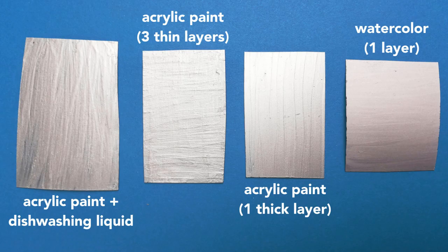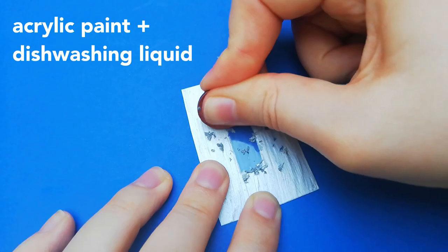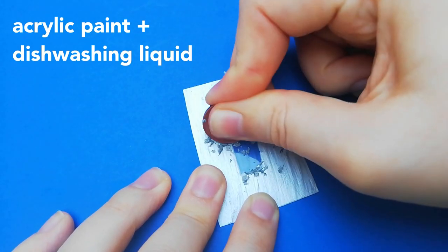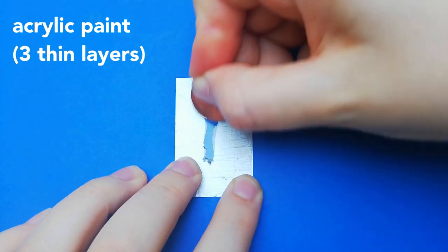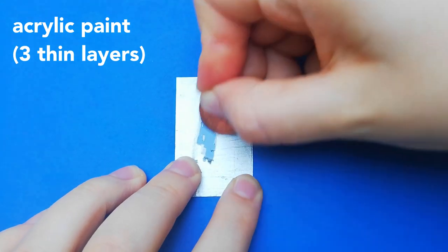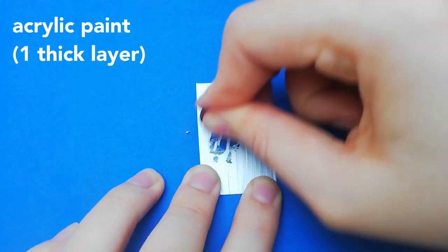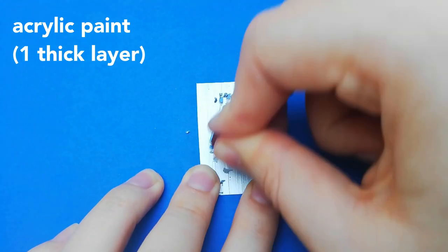First I wanted to test which paint works best. Most DIYs that I have seen use acrylic paint mixed with dishwashing liquid. But when I compare it to pure acrylic paint I didn't feel a difference. I would go for one thick layer of pure acrylic paint instead.